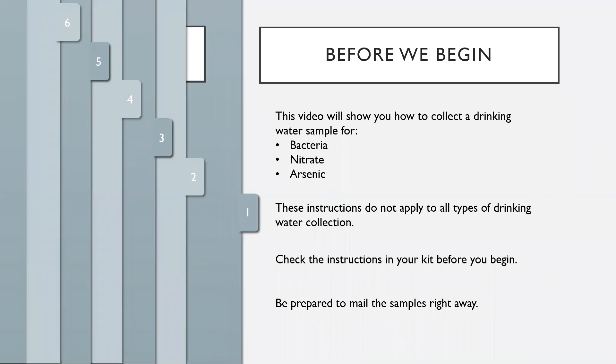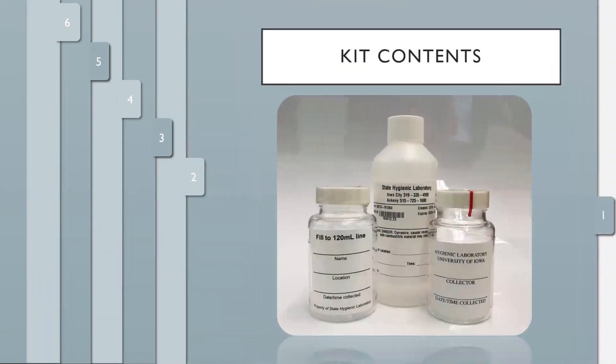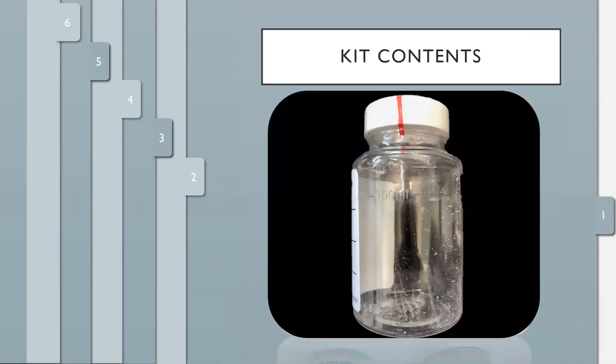Let's get started. As you unpack the kit, you will see collection bottles, instructions, and paperwork. You may notice a powder or liquid at the bottom of your sample bottle. These are preservatives added by the lab. Be sure not to rinse this out.